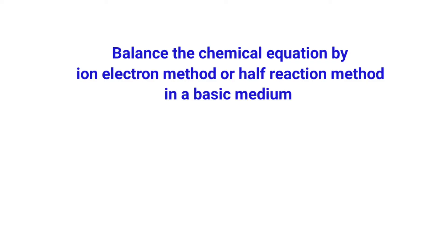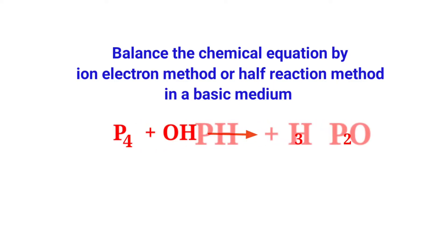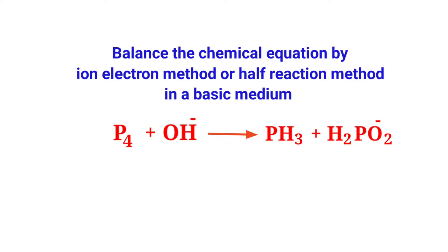Balance the chemical equation by ion electron method (half reaction method) in a basic medium. The given equation is: tetra phosphorus plus hydroxide ion yields phosphine plus hypophosphite ion.